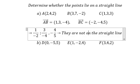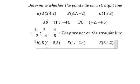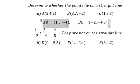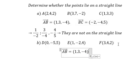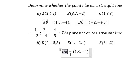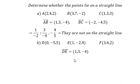So they are not on the straight line. For the next one, we use the same technique. We need to find vector DE: 1 minus 0 gives 1, negative 2 minus negative 5 gives 3, and 4 minus 5 gives negative 1.